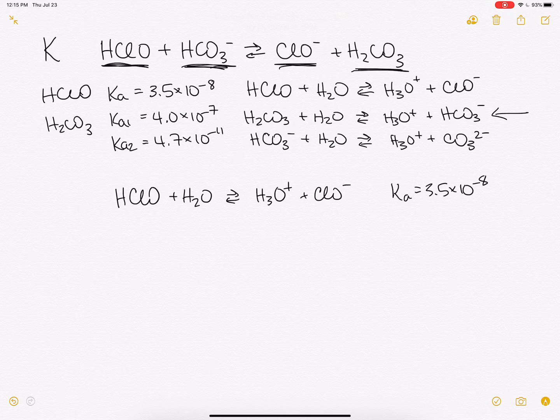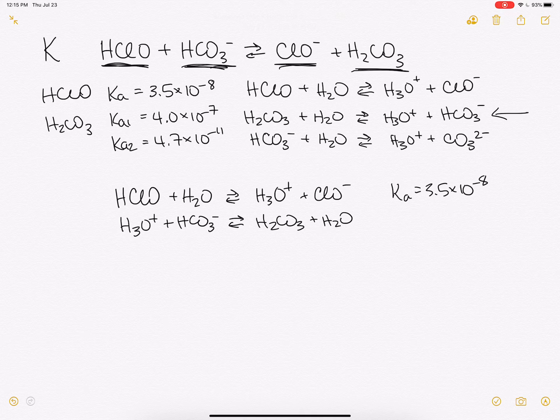we want to use this equation, the second one here, that corresponds to Ka1 for H2CO3, but we want to reverse it. So we're going to just write it backwards. And so we'll have H3O+ plus HCO3- makes H2CO3 plus H2O. And our K for this is actually, because it's the reverse, 1 over Ka1. So we'll end up with our Ka. Because we reversed the equation, we'll end up with the inverse of the Ka.